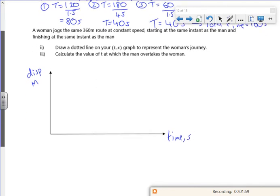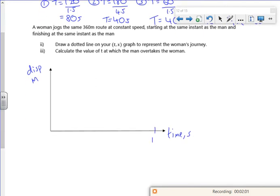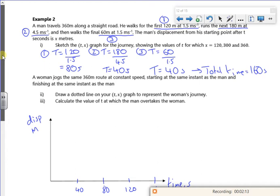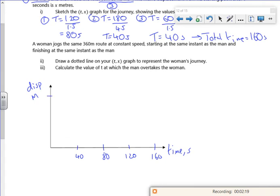Right, so if I can split this up. If that's 160, roughly half is 80, roughly half is 40, roughly half is 120. So my total displacement is 360 there. So the top there is 360, that's where I'm going to get to in meters.